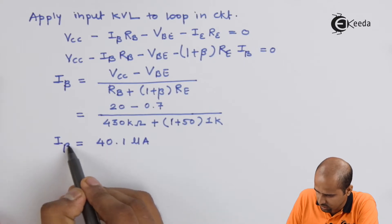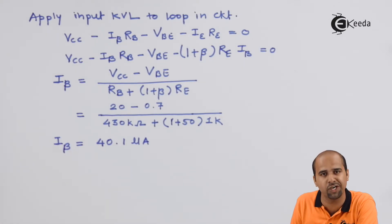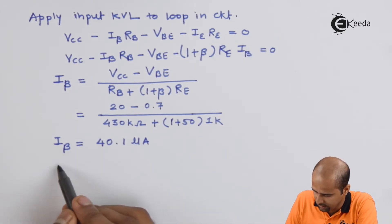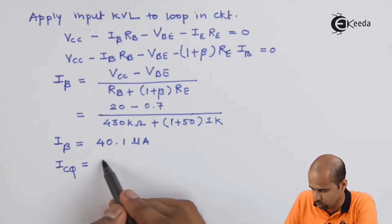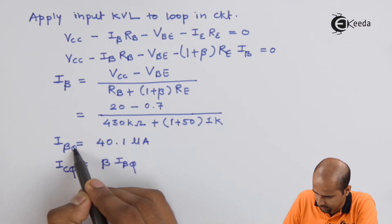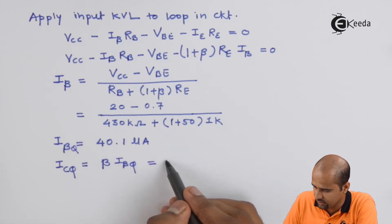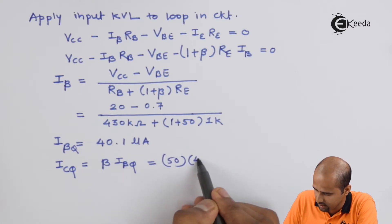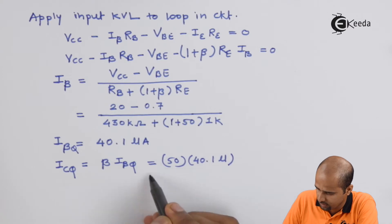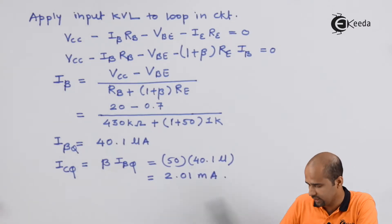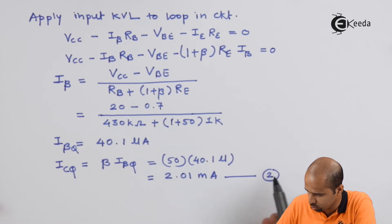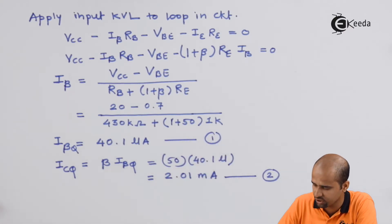This value comes out to be 40.1 microampere. So we have got the value of base current which is in terms of 10 to the power minus 6 ampere. And now it's time to calculate the value of Q point first parameter that is ICQ is nothing but beta into IBQ. This is nothing but IBQ. So here we will say beta is 50, 50 multiplied by 40.1 micro. And this gives you the value 2.01 milliampere. We will note this as equation number 2. This is number 1. It's not equation it's a value.